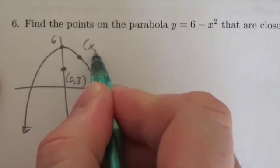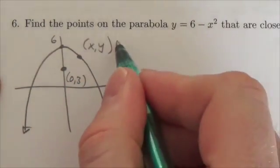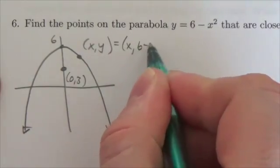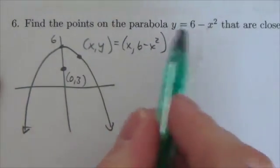We don't know what the coordinates are of this point but we know that it's going to be (x, y) and that's going to be x comma six minus x squared because we know what y is.